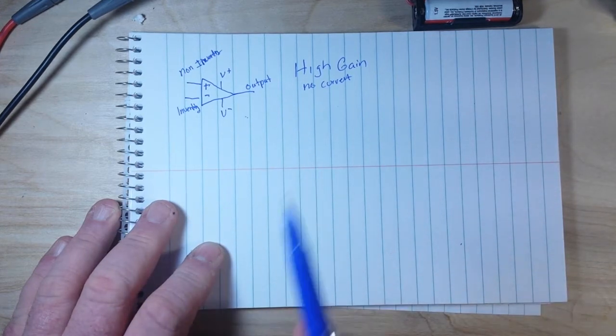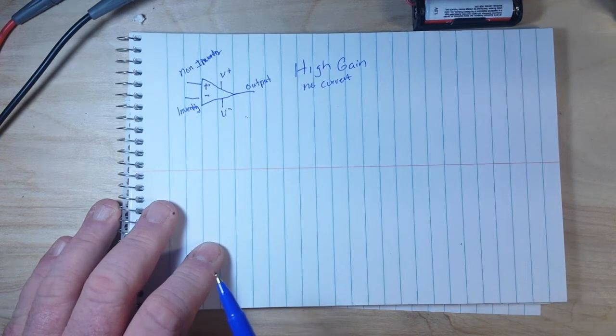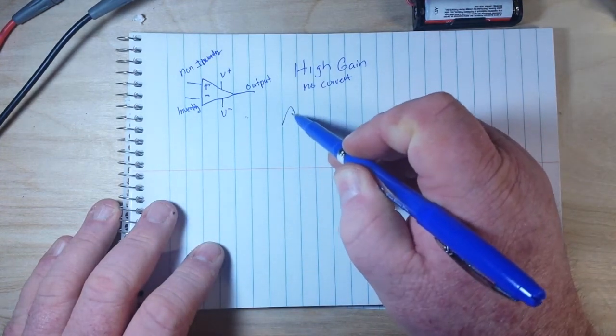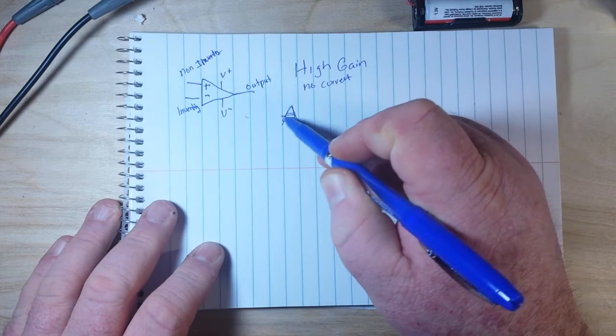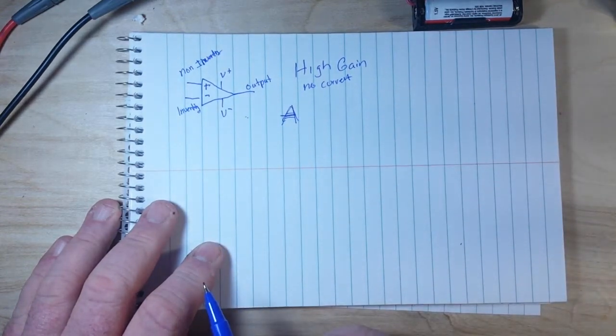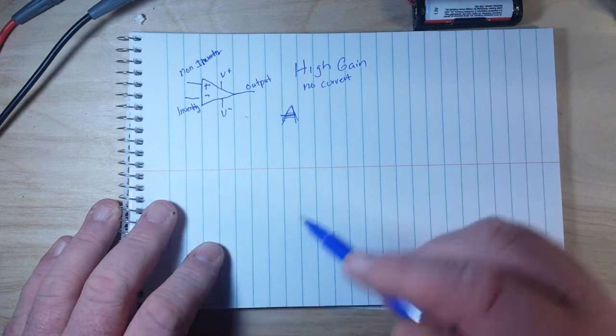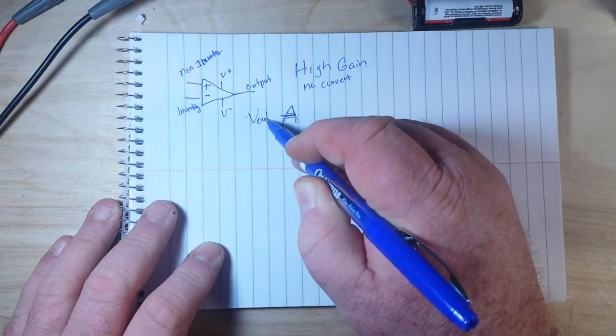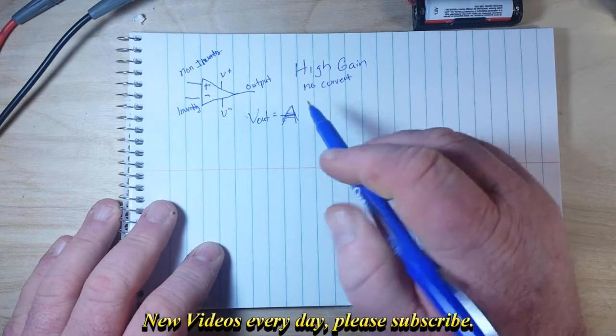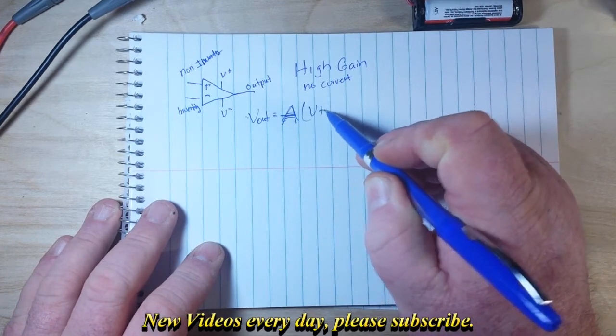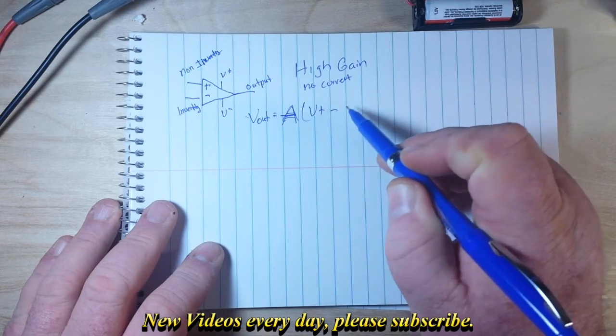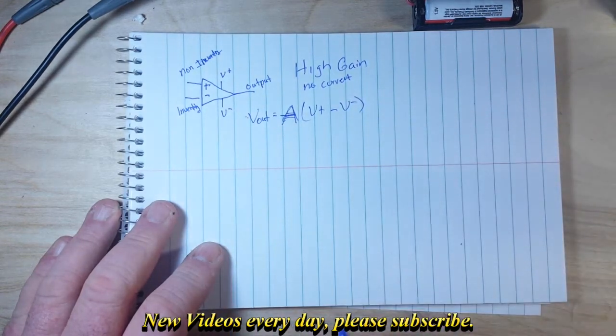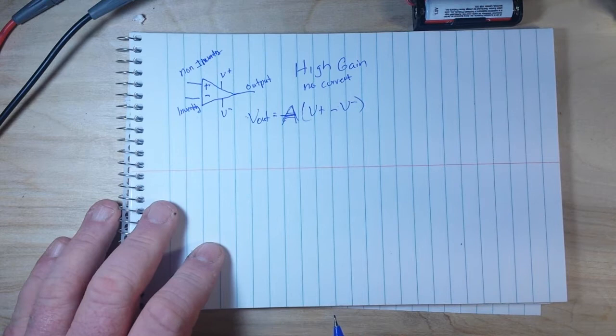Now the formula to figure out the amplification—oops, god, I'm like brain dead today—is A. That's the amplification. So we say V out equals A times V plus minus V minus. And that is how we figure out the amplification of the op amp.